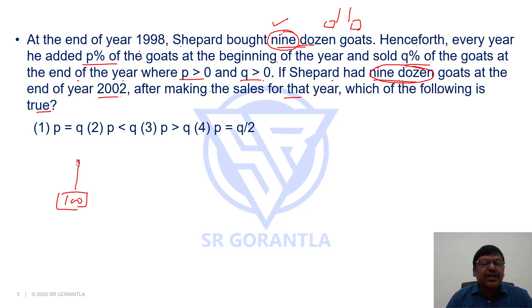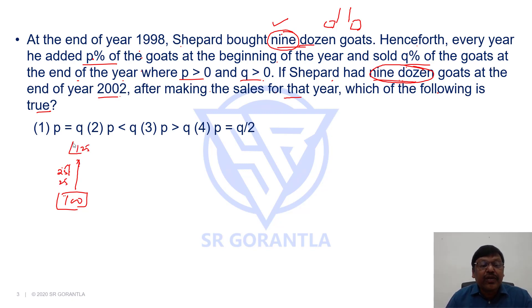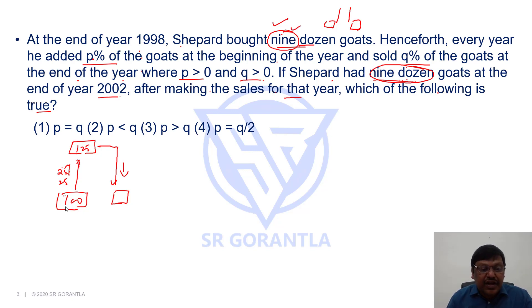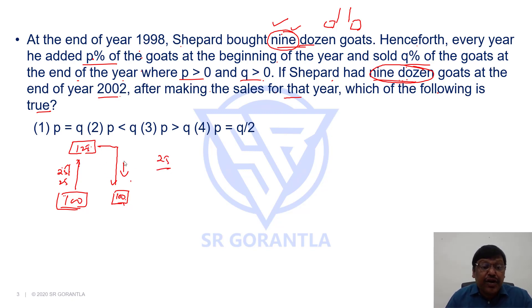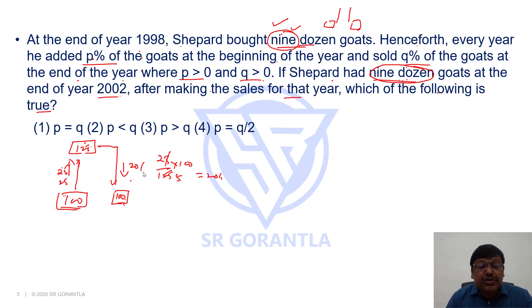I increase it by some percentage — let us say I increased it by 25 percent. 25 percent of 100 is 25, so it becomes 125. Now I should reduce this 125 by some percentage to get back to the original value. From 125, if I want to come back to 100, the difference is 25. 25 from 125 is 1/5, which is 20 percent. So if you have increased by 25 percent, you should reduce by 20 percent.